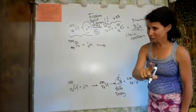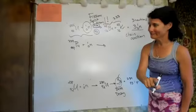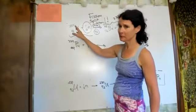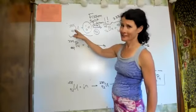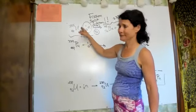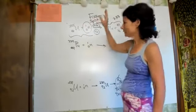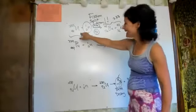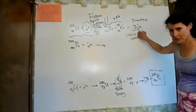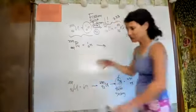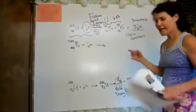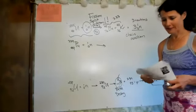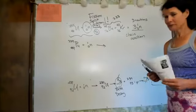You only need one neutron to get it going. Even in just a milligram of uranium, there's around Avogadro's number of uranium atoms — roughly 10 to the 20th. One neutron splits one atom; now you have three neutrons; they split three more atoms; each of those makes more neutrons. And it goes critical in less than the snap of your finger, which is unfortunately what happens in an atomic bomb.